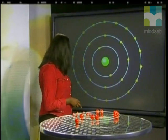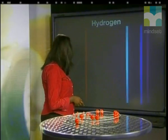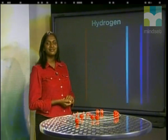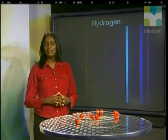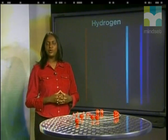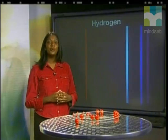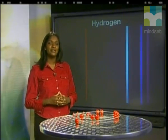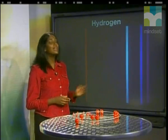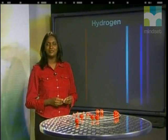Secondly, he could use this new model to explain the line emission spectrum of hydrogen. Let's take a closer look at how we can link Bohr's model of the hydrogen atom to the line emission spectrum.